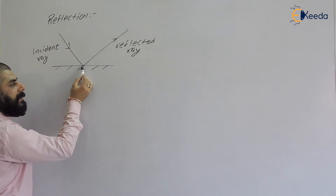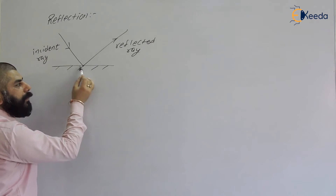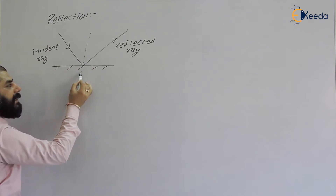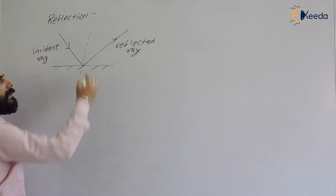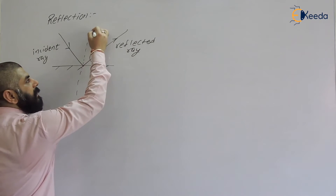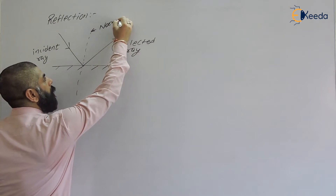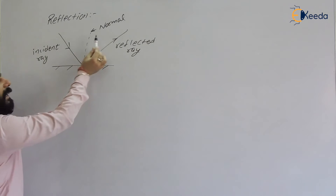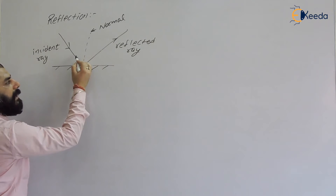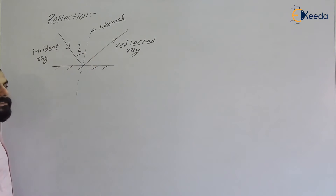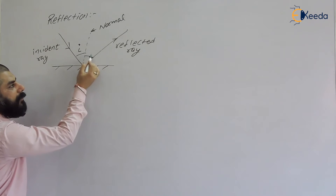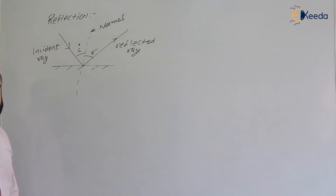There is an axis perpendicular to the surface at the point where the ray strikes — that is called the normal axis. The angle between the incident ray and the normal is called the angle of incidence, and the angle between the normal and the reflected ray is called the angle of reflection.